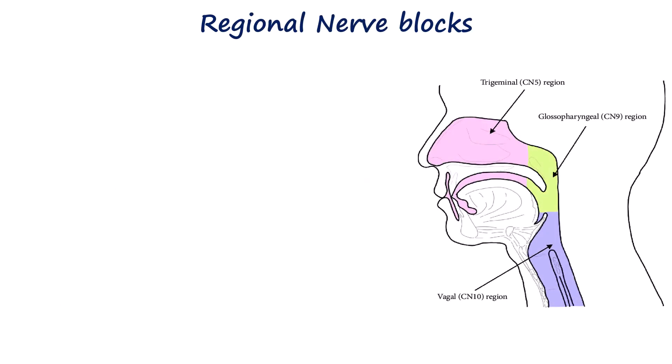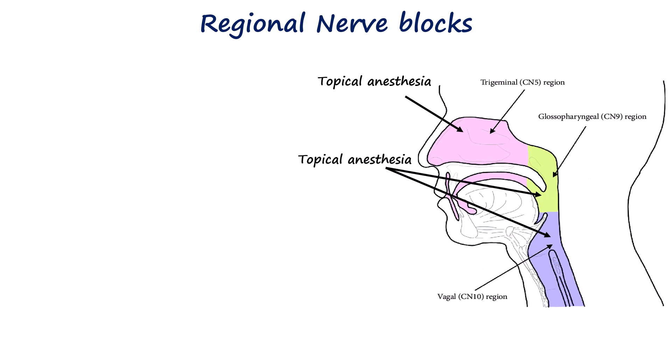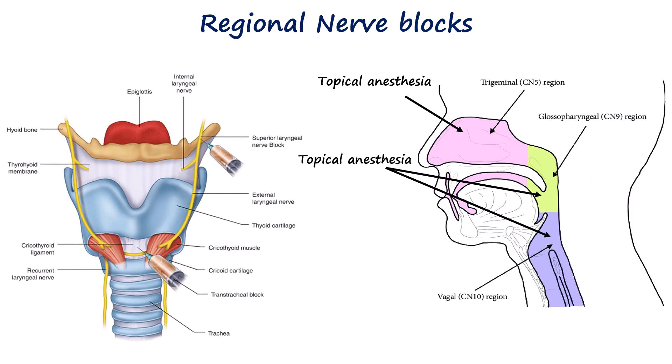For anesthetizing the nasal passage, topical anesthesia using sprays, nebulized anesthetics, or cotton swabs soaked in local anesthetics are effective. For the oropharynx and larynx, supplied by the glossopharyngeal, superior laryngeal, and recurrent laryngeal nerves, topical techniques work well too, but we also have the option of nerve blocks. These nerve blocks provide a deep level of anesthesia but pose a risk of injury to the nerve itself and adjacent tissues, and are technically more challenging than topical methods.